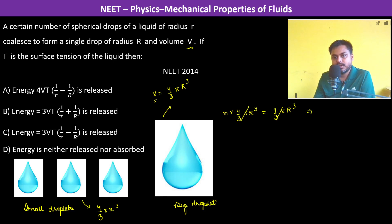So therefore we have N is equal to R cube divided by small r cube. That's the first equation. Now the energy, we have to talk about energy now. The energy should be released or absorbed or whatever.